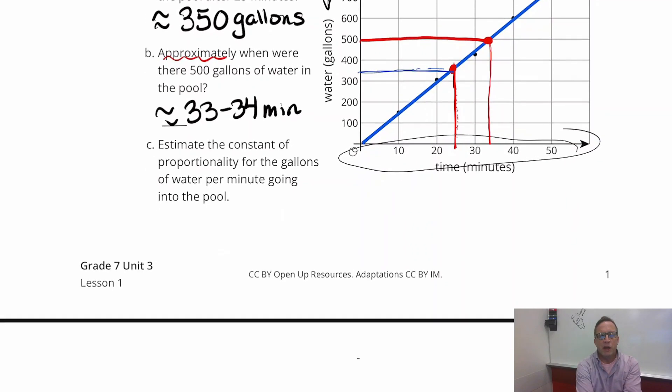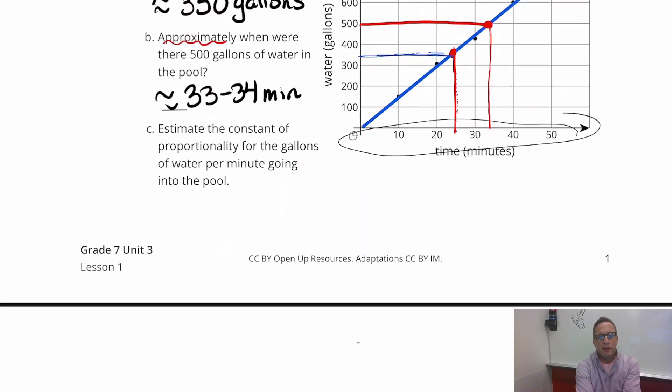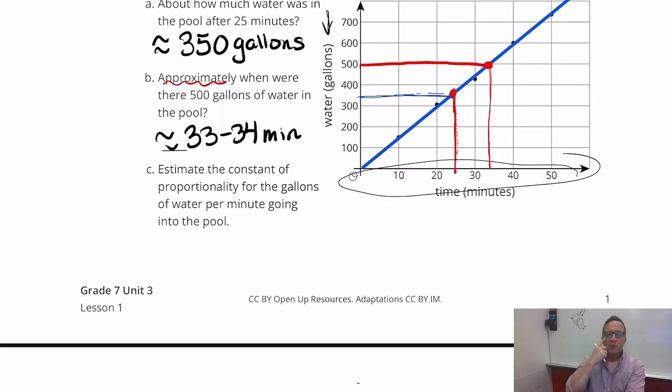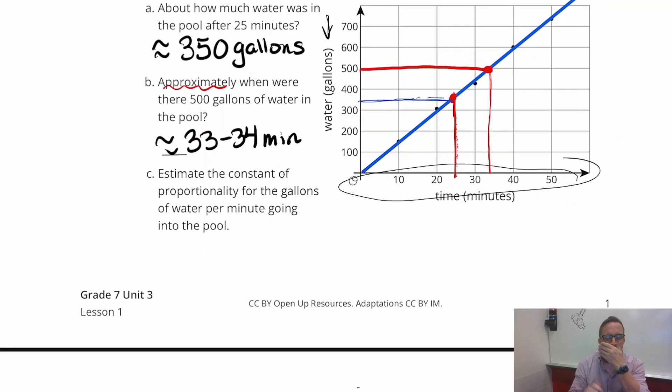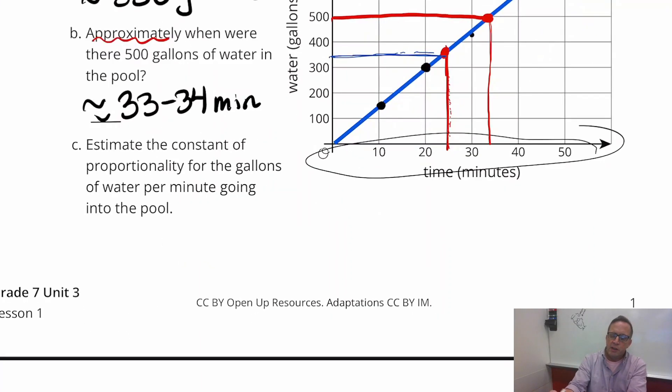Estimate the constant of proportionality for the gallons of water per minute going into the pool. So let's estimate this. What we're going to do here is I'm just going to take the numbers that we have. And again, I'm not sure what these are exactly. I mean, I could probably say what that one is. That's pretty good. And I could probably tell you what that one is as well. I'm going to use, let's use those three.